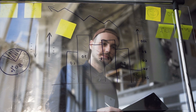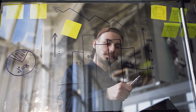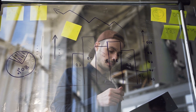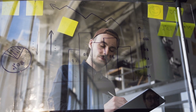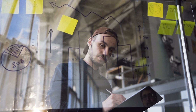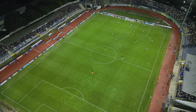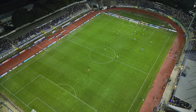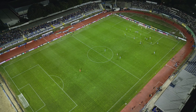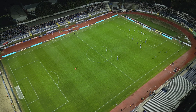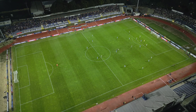Imagine you have a group of numbers like the goals scored in several football matches — say 2, 3, 4, 5 and 6. If we add these up and divide by the number of matches we get the average, which is the center value. But just knowing the average doesn't tell us the whole story. Are most games close to that average, or are some way above or below it? That's where standard deviation comes in — it tells us how far each number is from that average. A low SD means scores are consistent; a high SD means there's a wide spread.